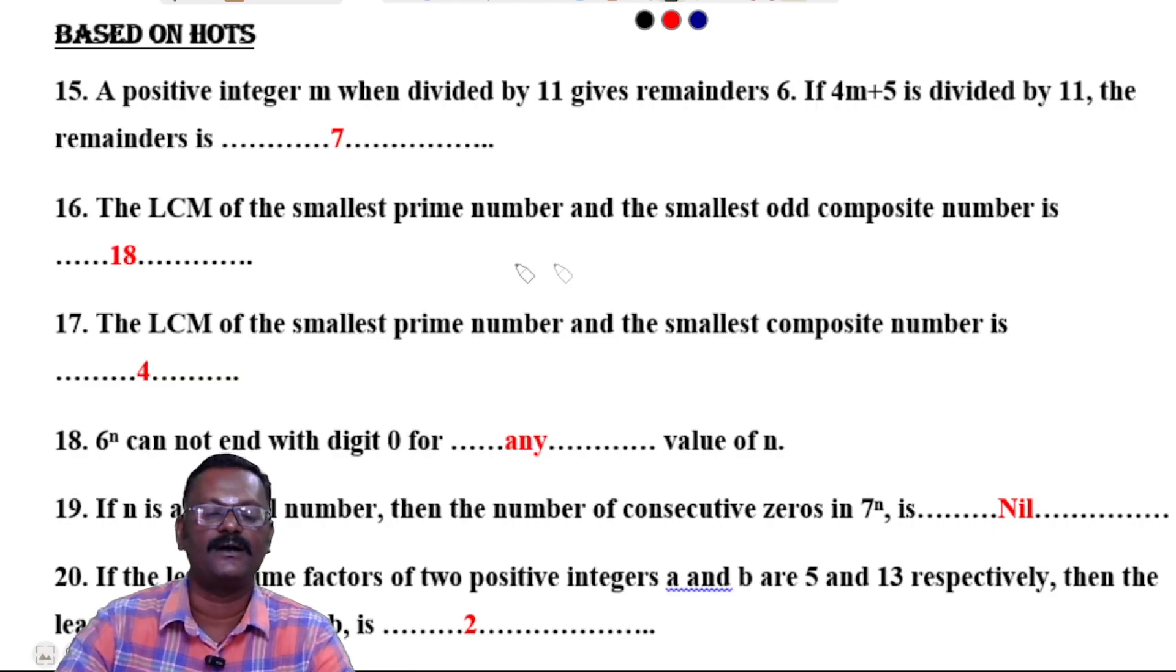Question 15: A positive integer m when divided by 11 gives remainder 6. If 4m + 5 is divided by 11, the remainder is 7.